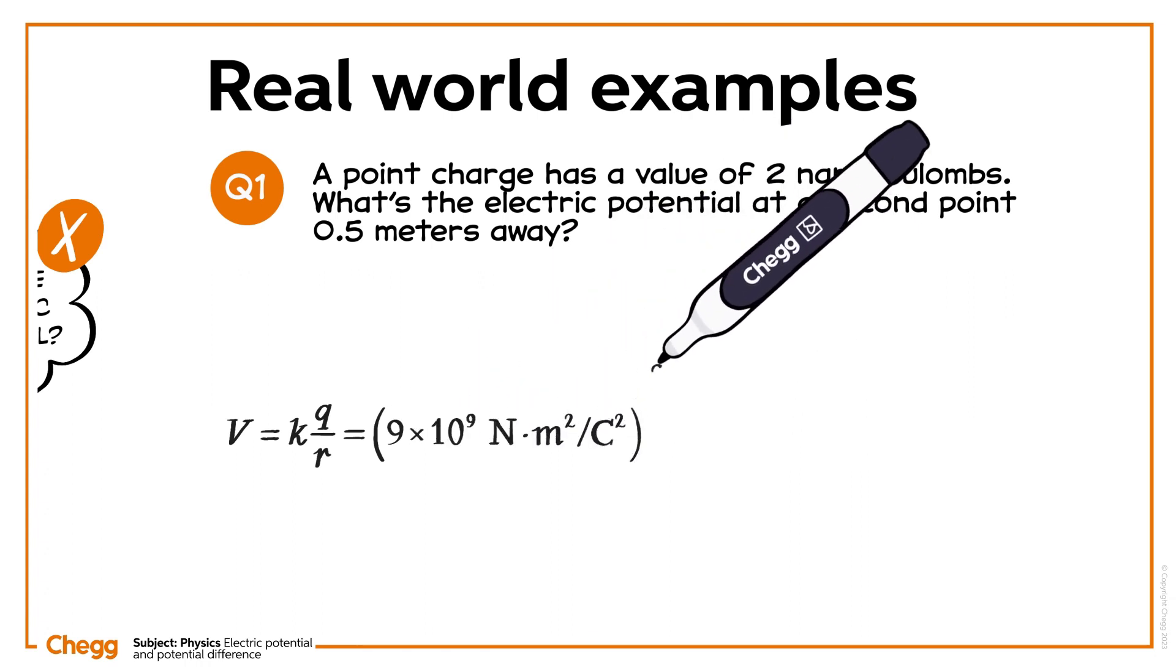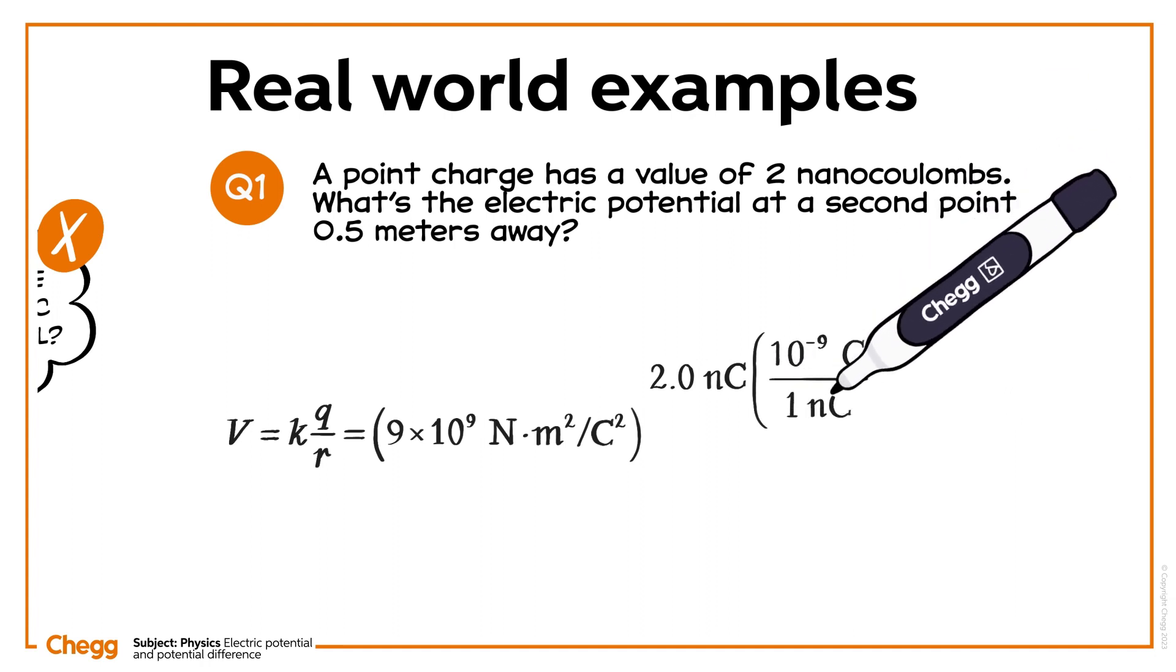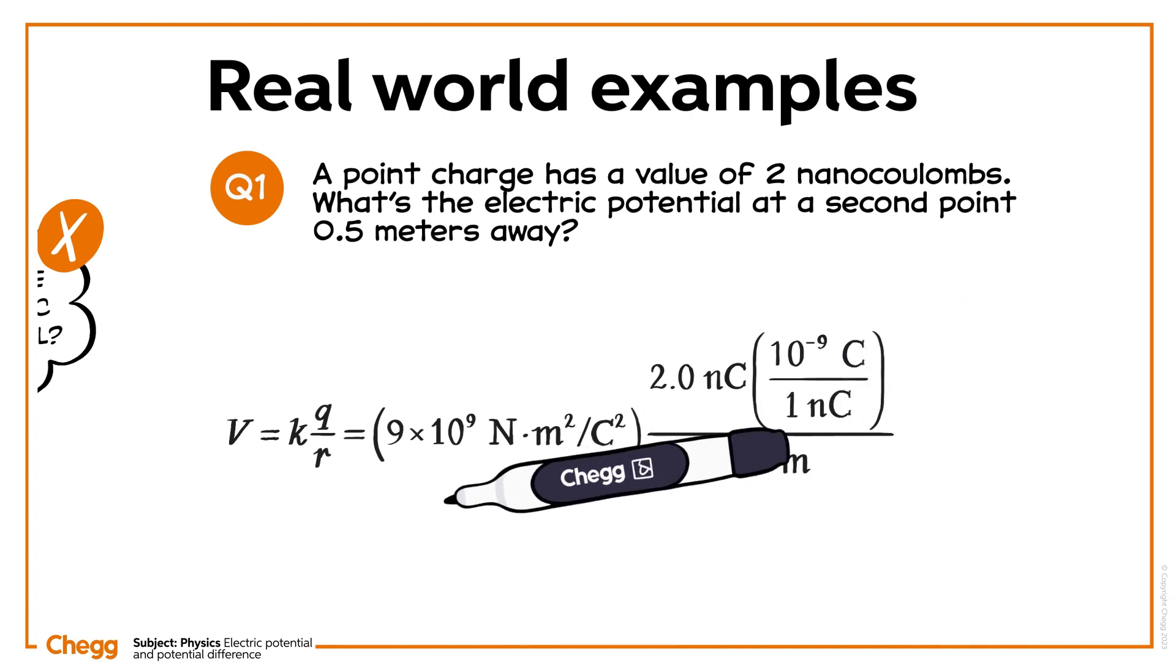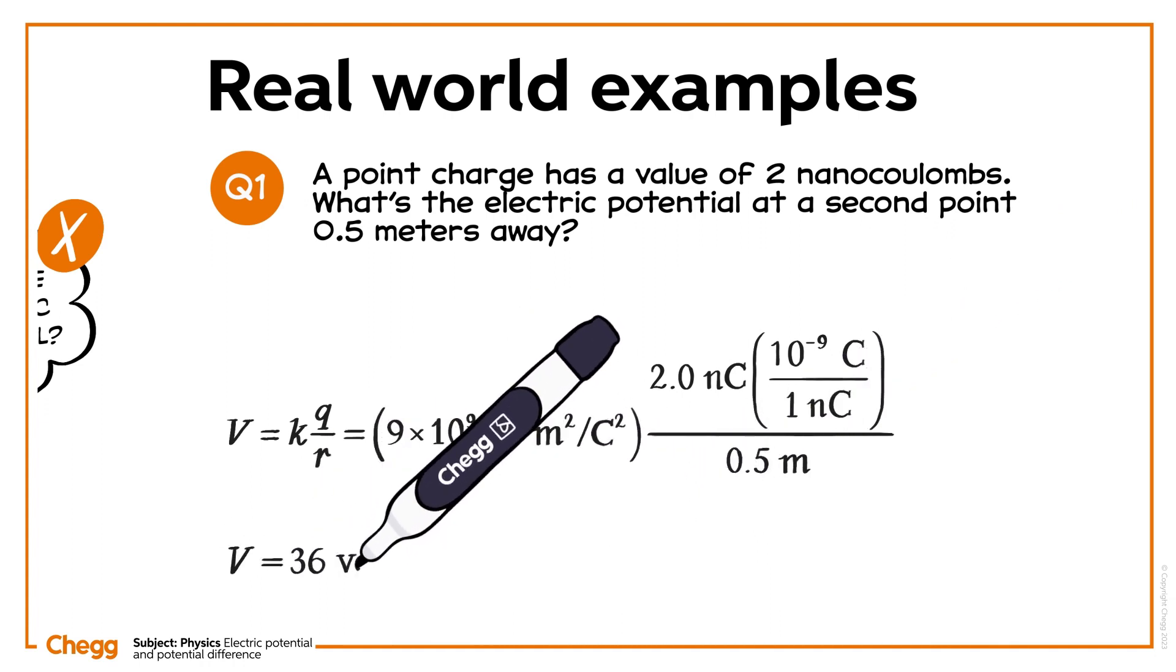K is always the same, Coulomb's constant. In this case, Q is two nanocoulombs, and R is 0.5 meters. Inputting the values we know and solving gives us an electric potential of 36 volts.